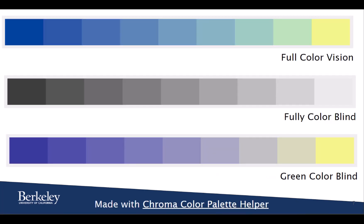This is an example of a colorblind accessible color palette built with the Chroma Color Palette Helper. The top row shows the color palette from the perspective of someone with full color vision. The middle row shows the same color palette from the perspective of someone who is fully colorblind. The last row shows the color palette from a green colorblind perspective. Users can still determine distinction between all three perspectives, even if the color they are visualizing is different.